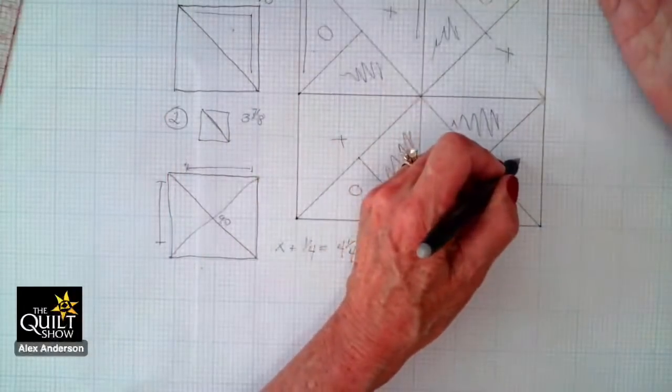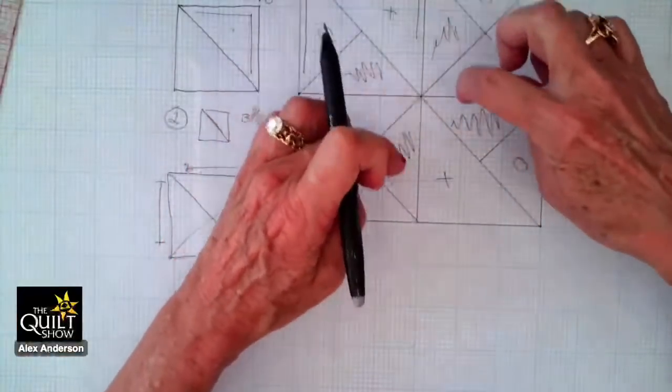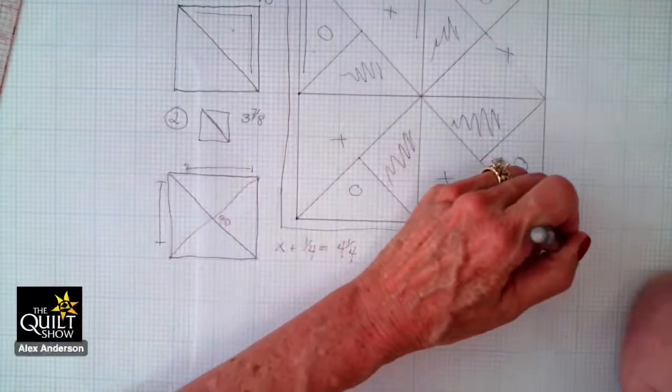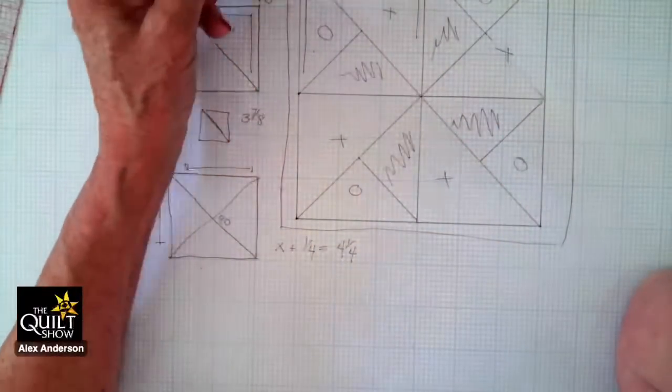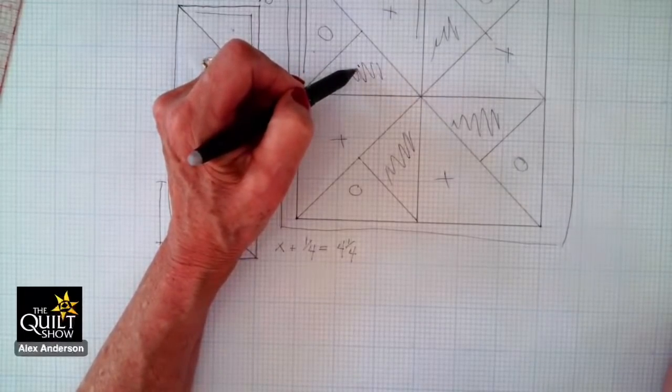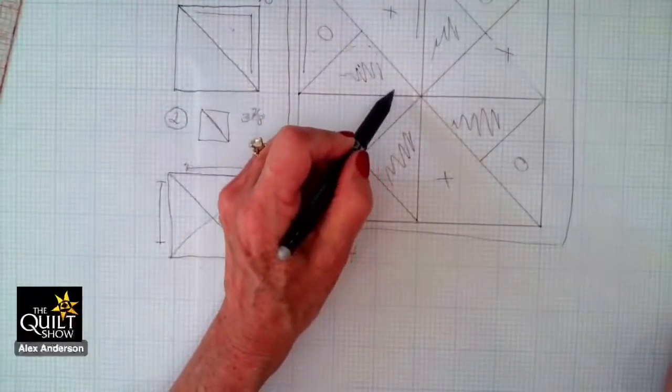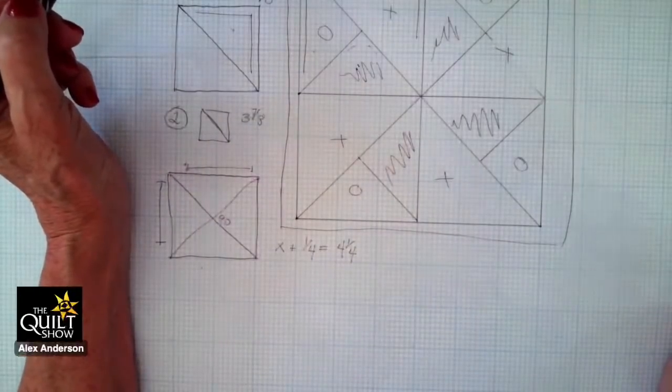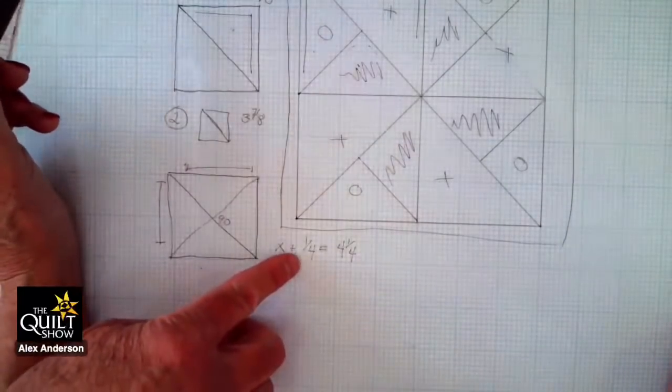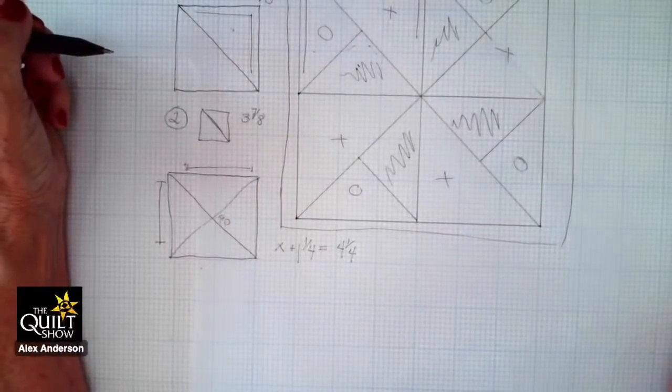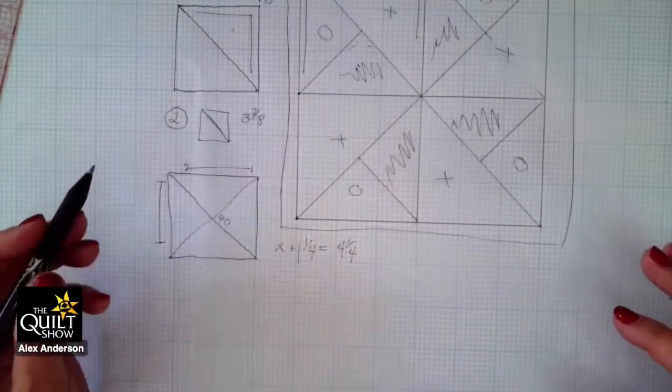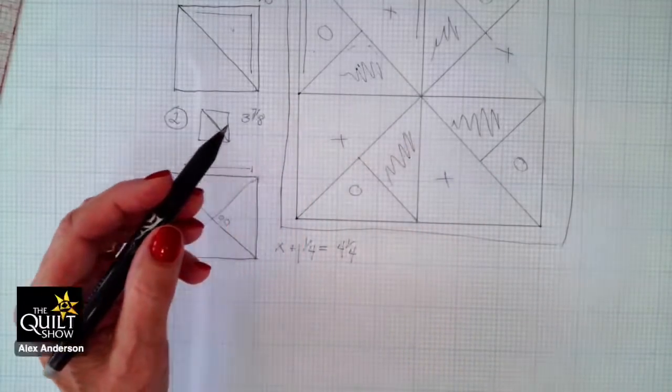Now this guy's a wild card in here because all I really am concerned is that the outside of this whole thing is on the straight grain. That's what I care. So this could be cut a quarter square triangle, or this could be cut a half square triangle. Choice is yours because if I cut it green, this will be on the bias. You can throw the coin up and have it land one way or another and you're fine.